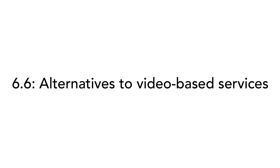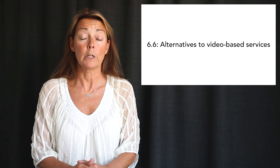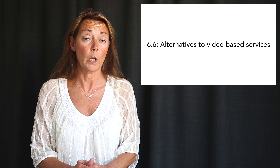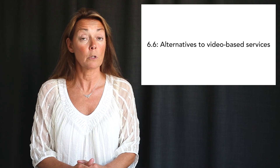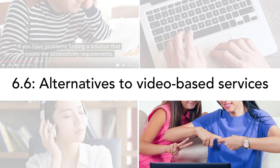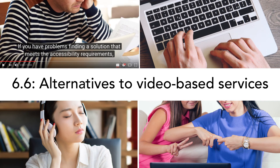6.6 covers alternatives to video-based services. When the ICT provides real-time video-based communication and also some kind of interactivity using voice communication, the ICT must provide the user an alternative way to access information and perform tasks. For example, if information is provided via audio, it must be possible to understand without hearing; if commands are made via voice, it must be possible to do so without speaking; and if information is provided visually, it must be possible to understand without seeing. If the ICT can generate real-time captions or real-time text, this could meet this requirement.